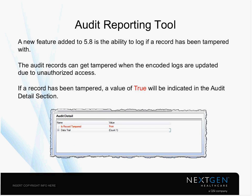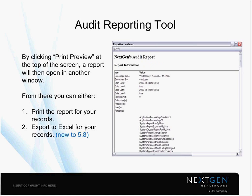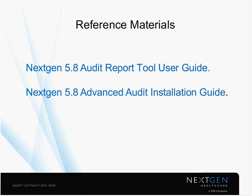As I mentioned earlier, there's a new feature for the report — if somebody tampered with something, you would see it here as a record tampered with, and it would come through with a true value. We've already talked about the ability to export to Excel, which is new to 5.8. There are reference materials available or soon to be available on NextGen.com — that's your 5.8 Audit Report Tool User Guide and the Advanced Audit Installation Guide. They walk you through how to utilize this application. Pretty easy, pretty functional from start to bottom.